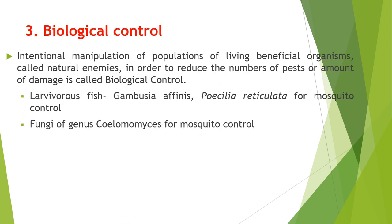The next method of vector control is biological control, which is the intentional manipulation of populations of living beneficial organisms — called natural enemies — in order to reduce the numbers of pests or amount of damage. For example, larvivorous fish like Gambusia affinis and Poecilia reticulata for mosquito control. You can also use fungi of the genus Lagenidium for mosquito control.